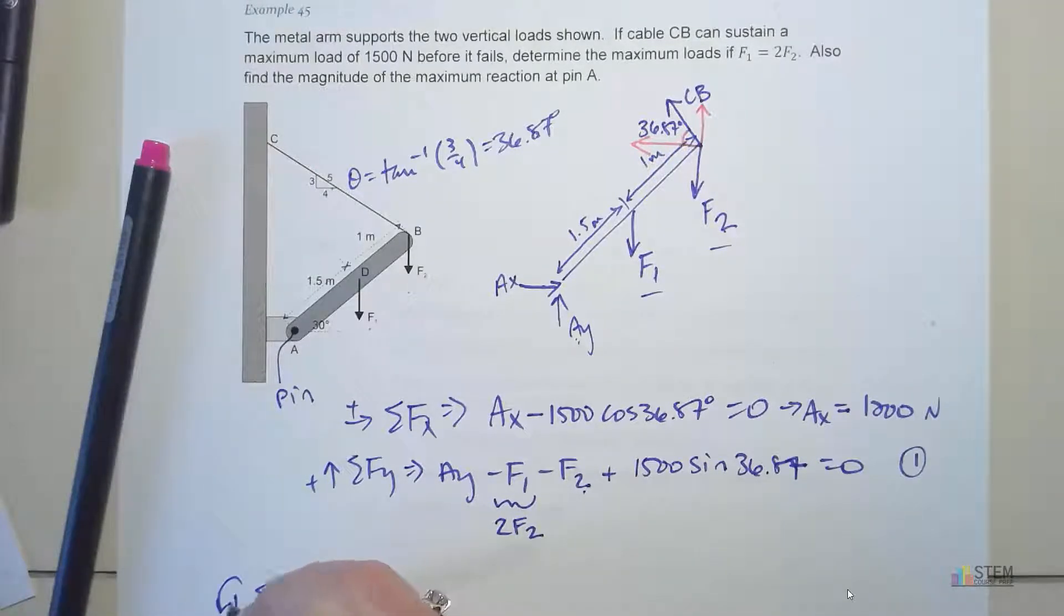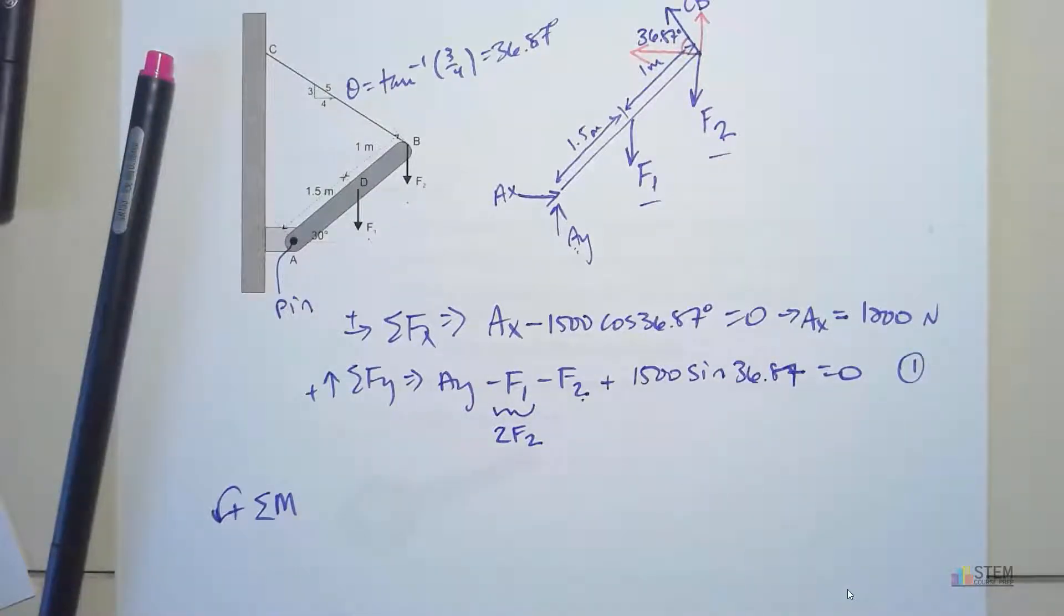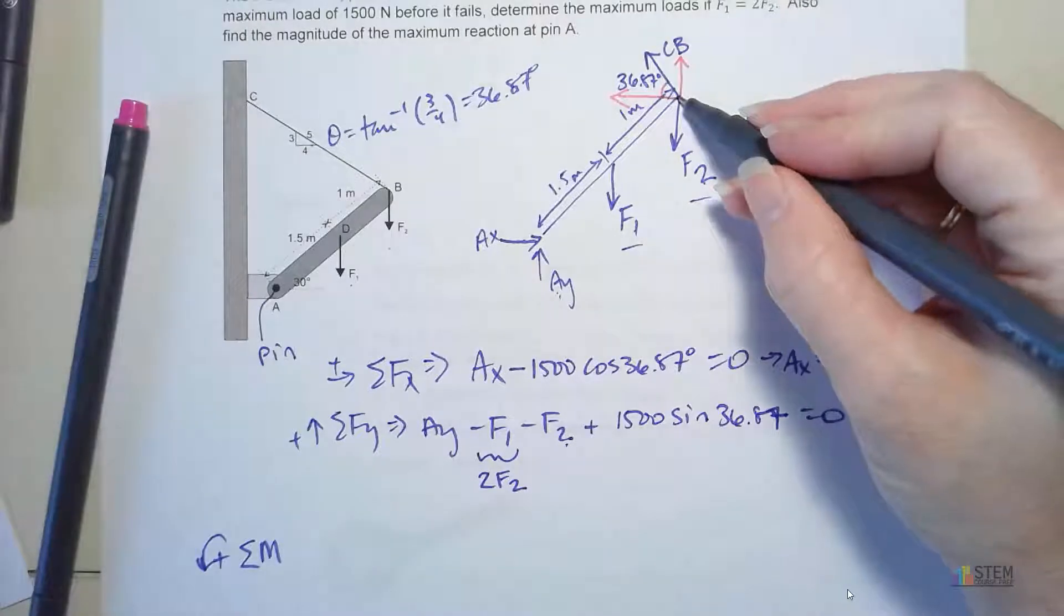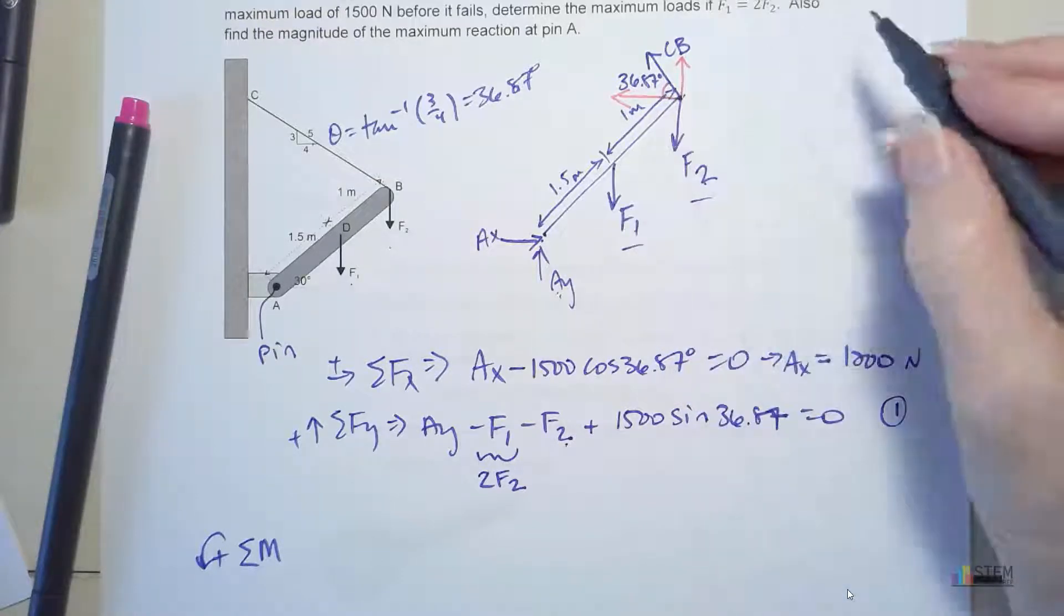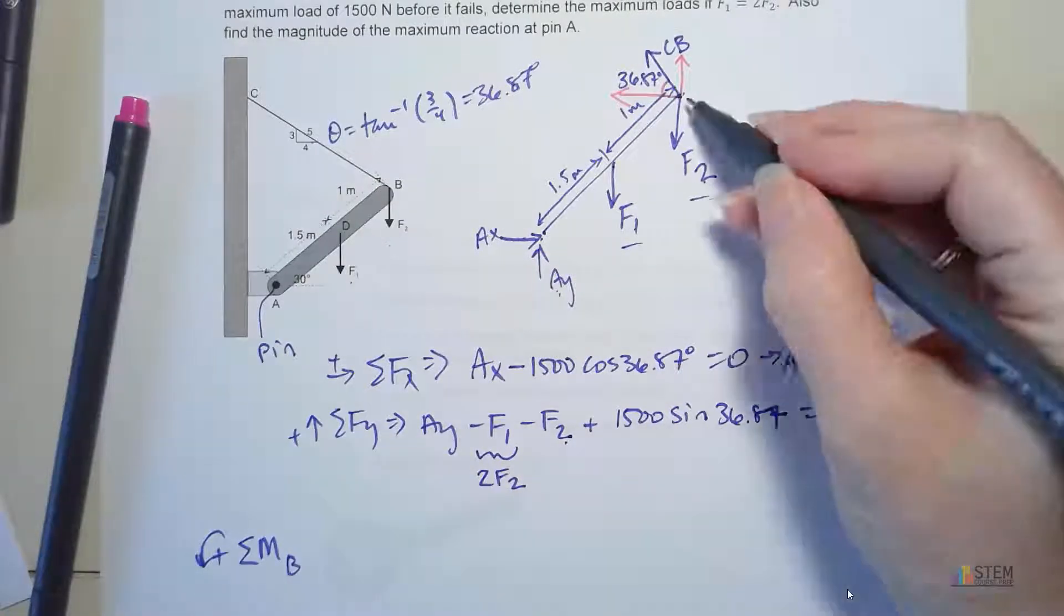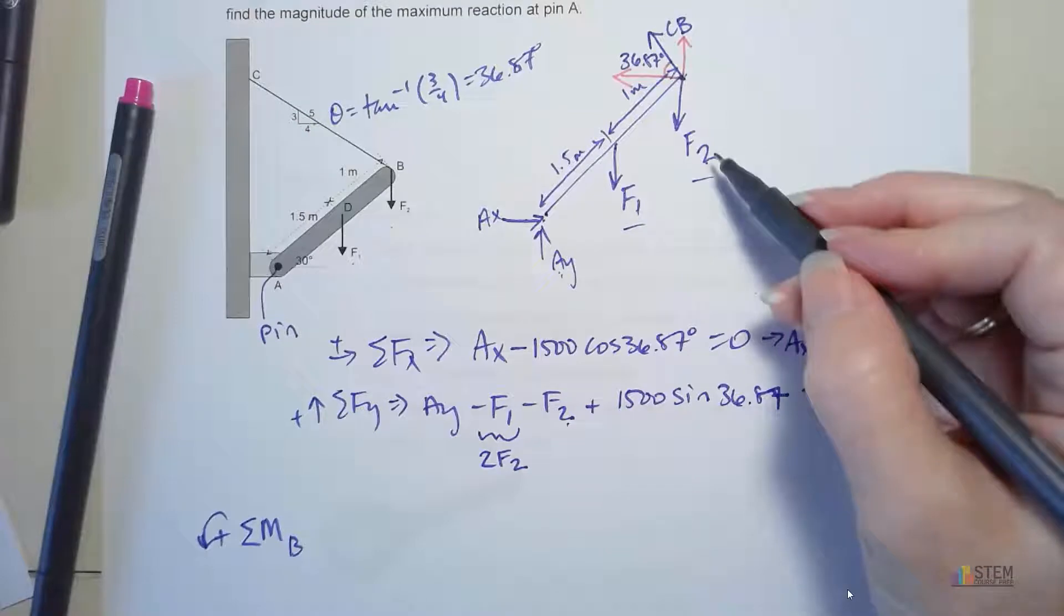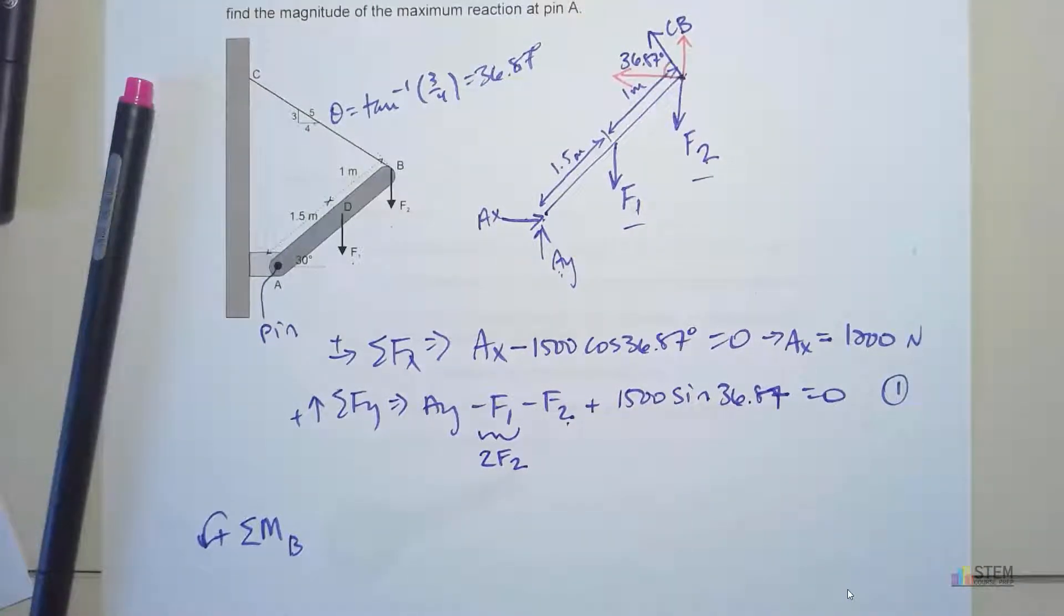Now let's look at a moment. Counterclockwise will be positive. I need to figure out a point where I want to find my moments about. What do you think would be a good point? Remember, you want the point that has the most unknowns going through it. Here, there's not really one choice that's better than another. You would want to either pick this point or probably this point. I guess you could also pick this one, but I would say one of these. I'm going to go ahead and pick B, this one up here. When I do that, I get rid of that unknown there.